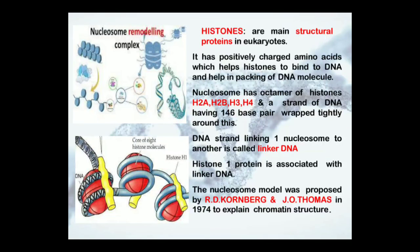What are histones? Histones are the main structural proteins in eukaryotes. They have positively charged amino acids which help histones to bind to DNA and help in the packing of the DNA molecule. The nucleosome has an octamer of histones — H2A, H2B, H3, and H4 — and a strand of DNA which has 146 base pairs wrapped tightly around it.